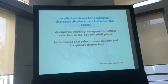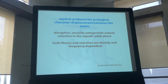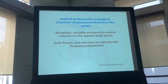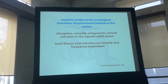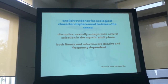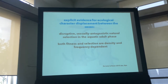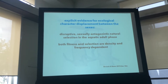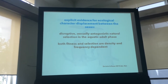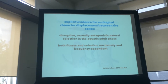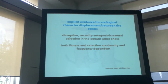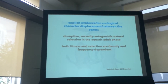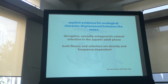The two main pieces of evidence are: first, we find disruptive, sexually antagonistic natural selection occurring in breeding ponds during the aquatic phase; and second, both fitness and selection are density- and frequency-dependent in the manner expected under competition models of divergence. So we have, at least in one subspecies in this genus, evidence for ecological character displacement between the sexes.